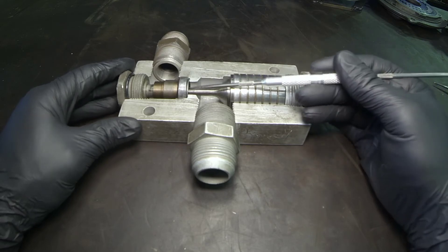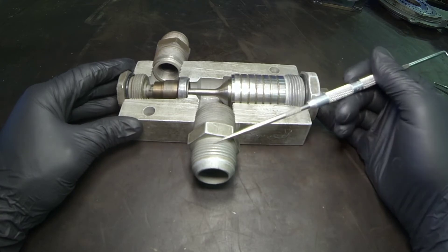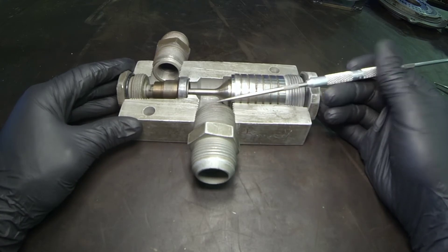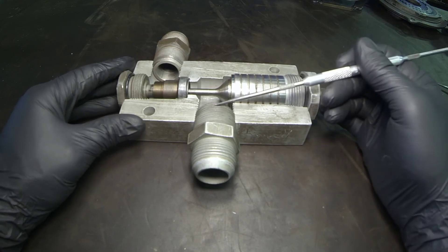The directional control valve would be connected to right here. Work port A of the directional control valve would be plumbed to this fitting right here.